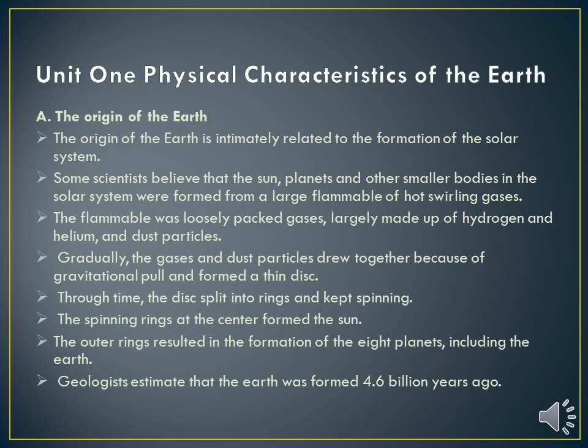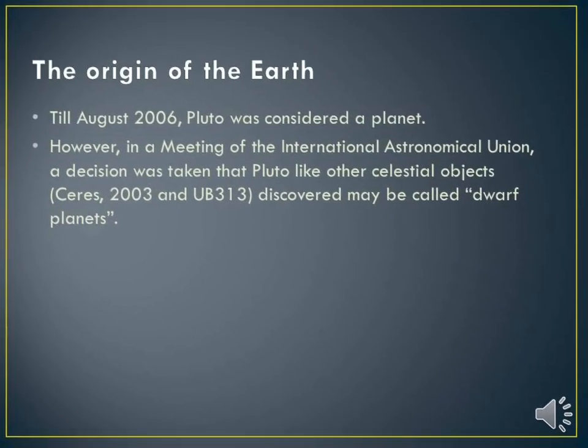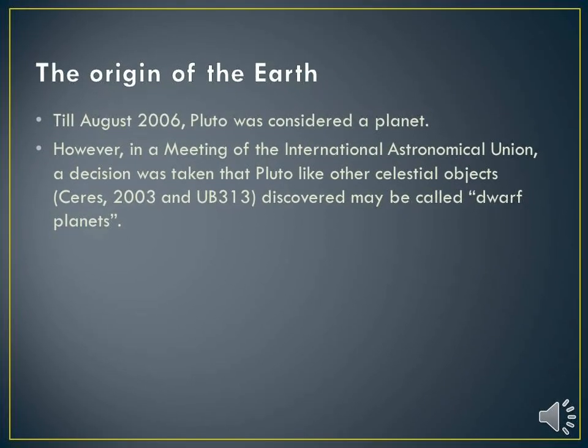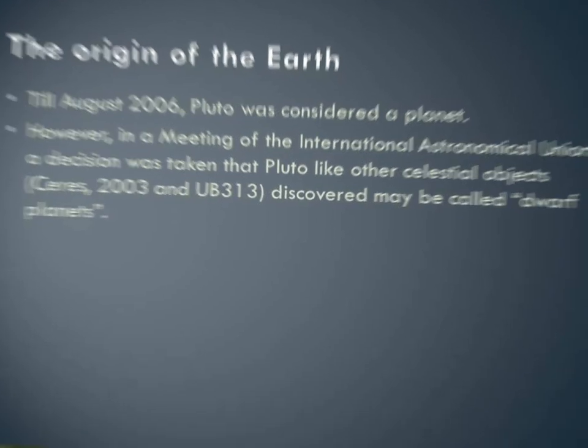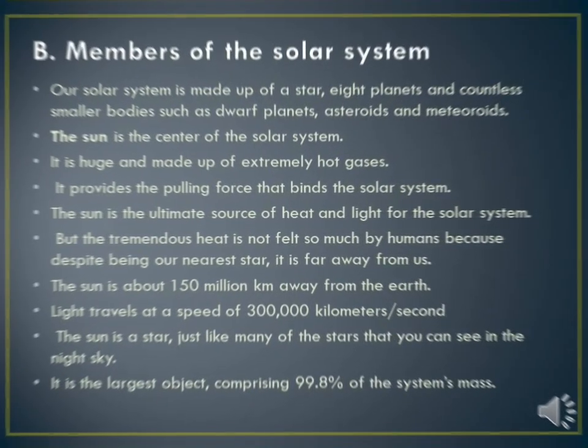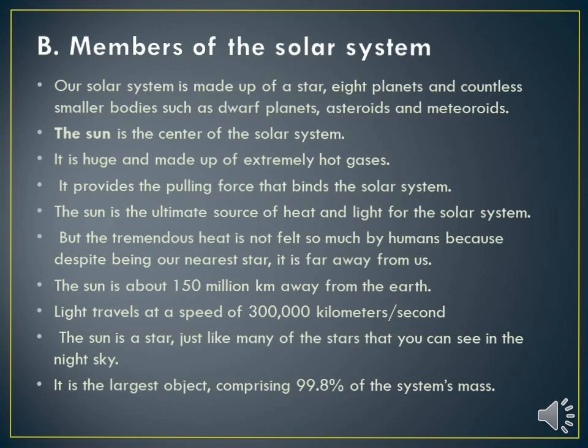Geological evidence shows that the earth was formed 4.6 billion years ago. Until August 2006, Pluto was considered a planet. However, in a meeting of the International Astronomical Union, a decision was taken about Pluto — Pluto was reclassified and called a dwarf planet. This is all about the previous session.